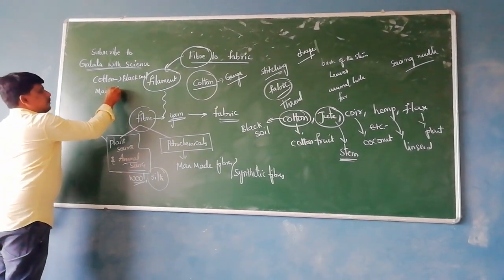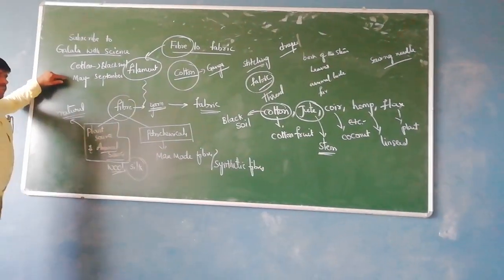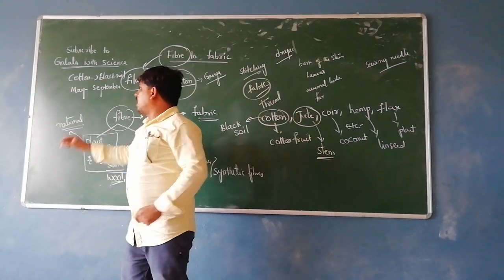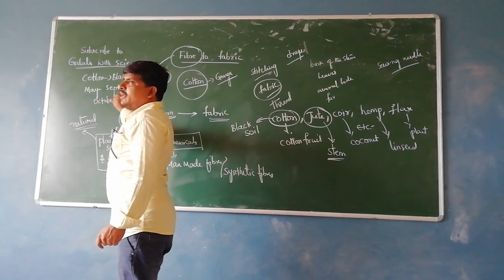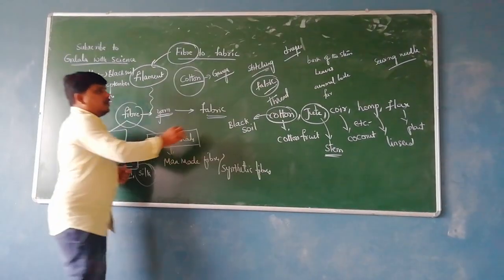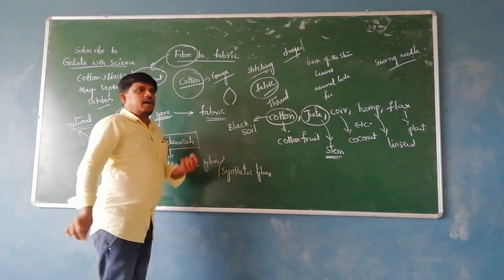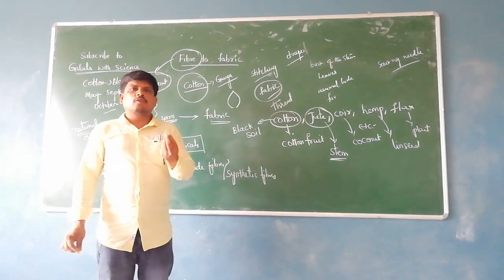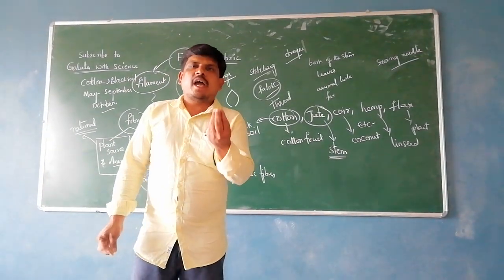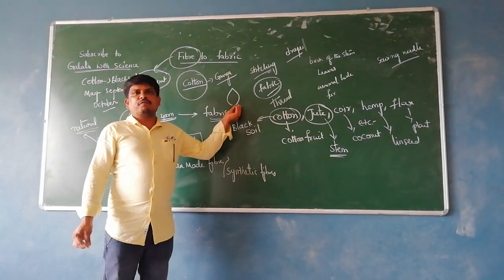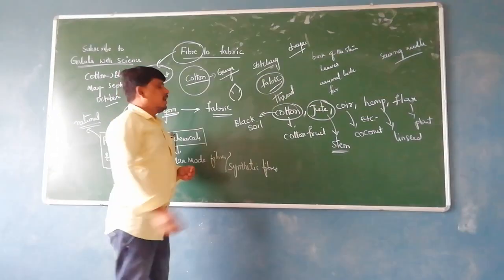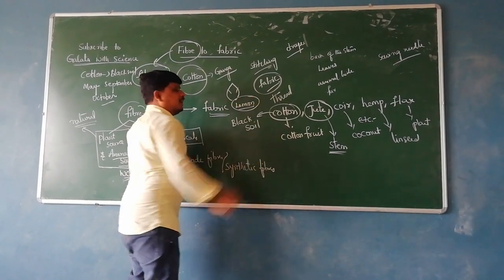Cotton grows well from May to September. If we grow cotton in this season, we can get a good harvest. Then in October we will harvest. Once the fruit gets mature, it breaks open and we can see the white color fiber inside the cotton fruit — that is an indication that we should start our harvest. The cotton fruit will be about the size of a lemon.